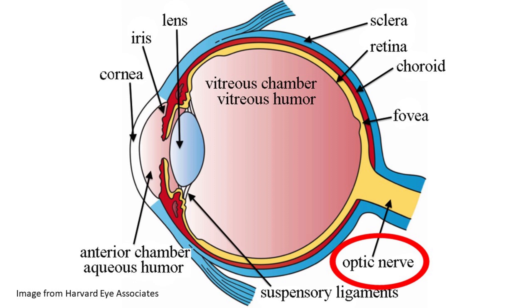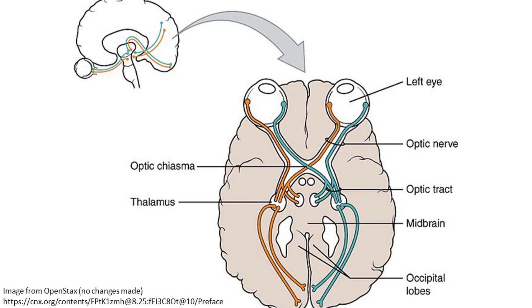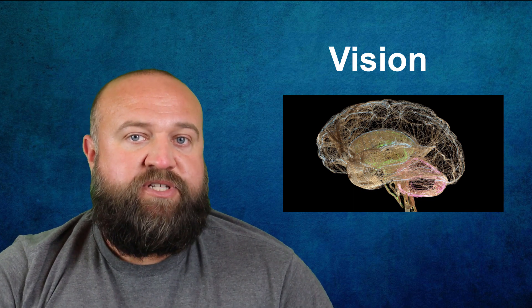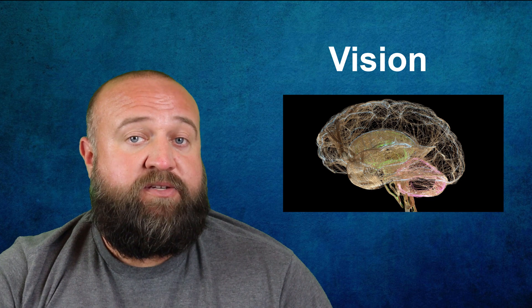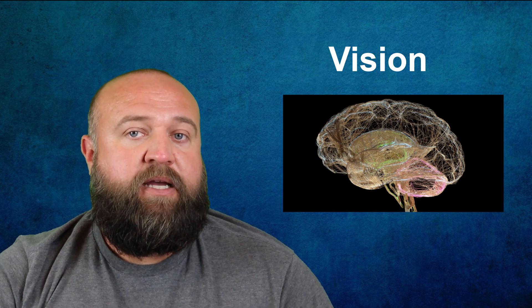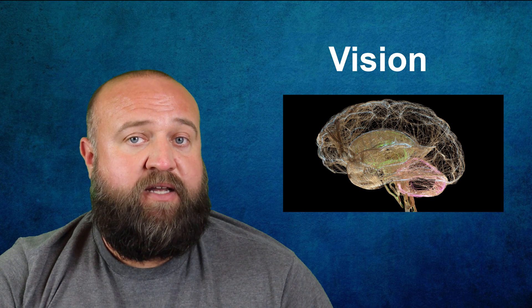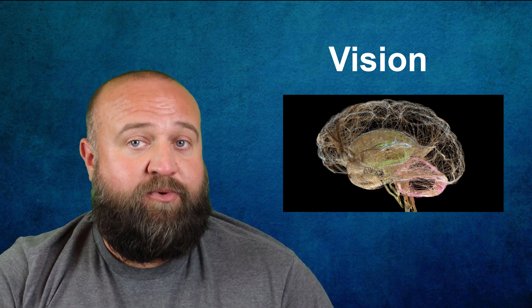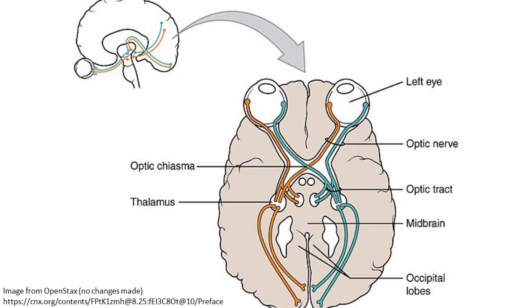These photoreceptors join behind the eye and form a bundle known as the optic nerve. These optic nerves travel from behind our eyes to the back of our brains all the way back to the occipital lobe. From there, visual information gets processed and sent to other parts of the brain. What's interesting though is that the left eye's optic nerve connects to the right occipital lobe and the right eye's optic nerve connects to the left occipital lobe. On their way to the occipital lobe, they cross one another in a structure called the optic chiasm, which is located just below the hypothalamus.